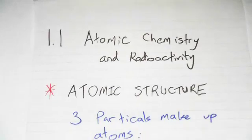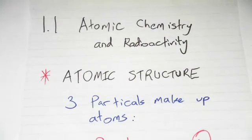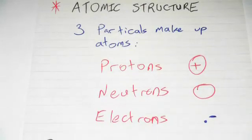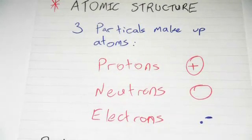So first of all, atomic structure. Three particles make up atoms: protons, neutrons, and electrons. Protons are positively charged and neutrons have no charge, they're neutral, and electrons are negatively charged.